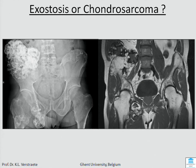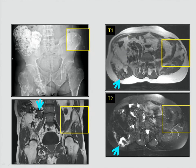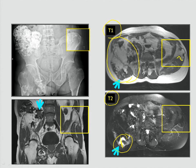Here we have a T1 weighted image, and you see the osseous part of the lesion. When we look on T2 images — we have T1 and T2 — you should look at the lesion. Here we see a thick cartilaginous cap which is more than 2.5 centimeters, so this part of the tumor is malignant. When we look at the other part, you see the bony component and there is no white cap — so this is exostosis, this is not malignant.